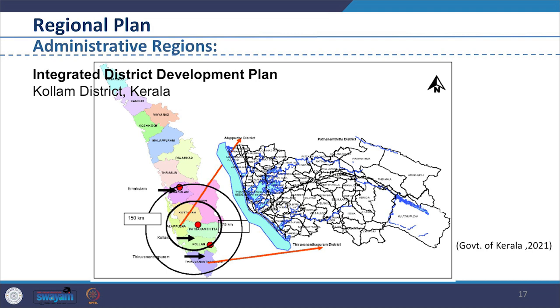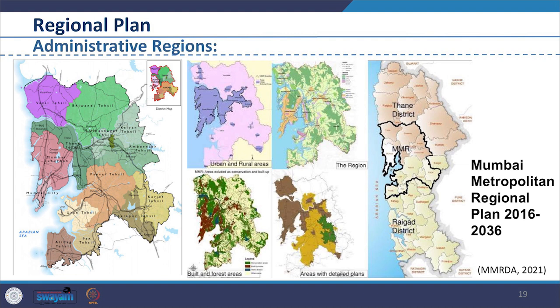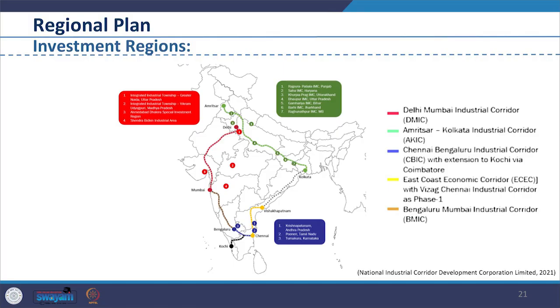Another example is the Integrated District Development Plan prepared at the district level by the state of Kerala. We are looking at the image of Kollam district taken from the Integrated District Development Plan of Kollam district, Kerala. Likewise, we can look at the Mumbai Metropolitan Regional Plan prepared for 2016 to 2036 by the Mumbai Metropolitan Authority, which is prepared for the metropolitan area rather than the district.